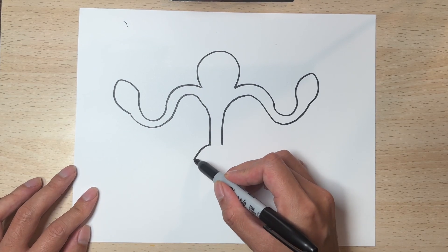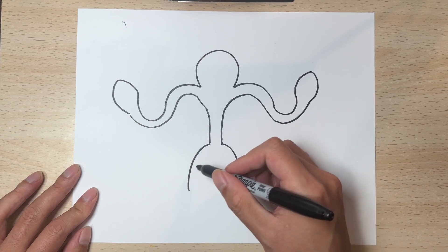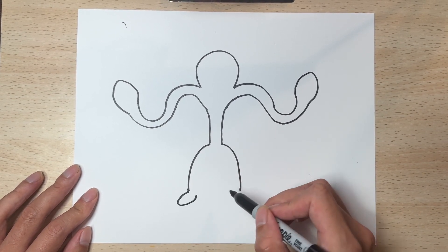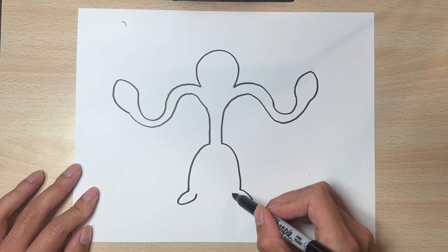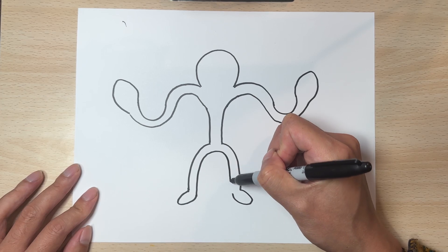One, two curves and this is gonna be our legs. And we just need to add in two little feet and connect like so.